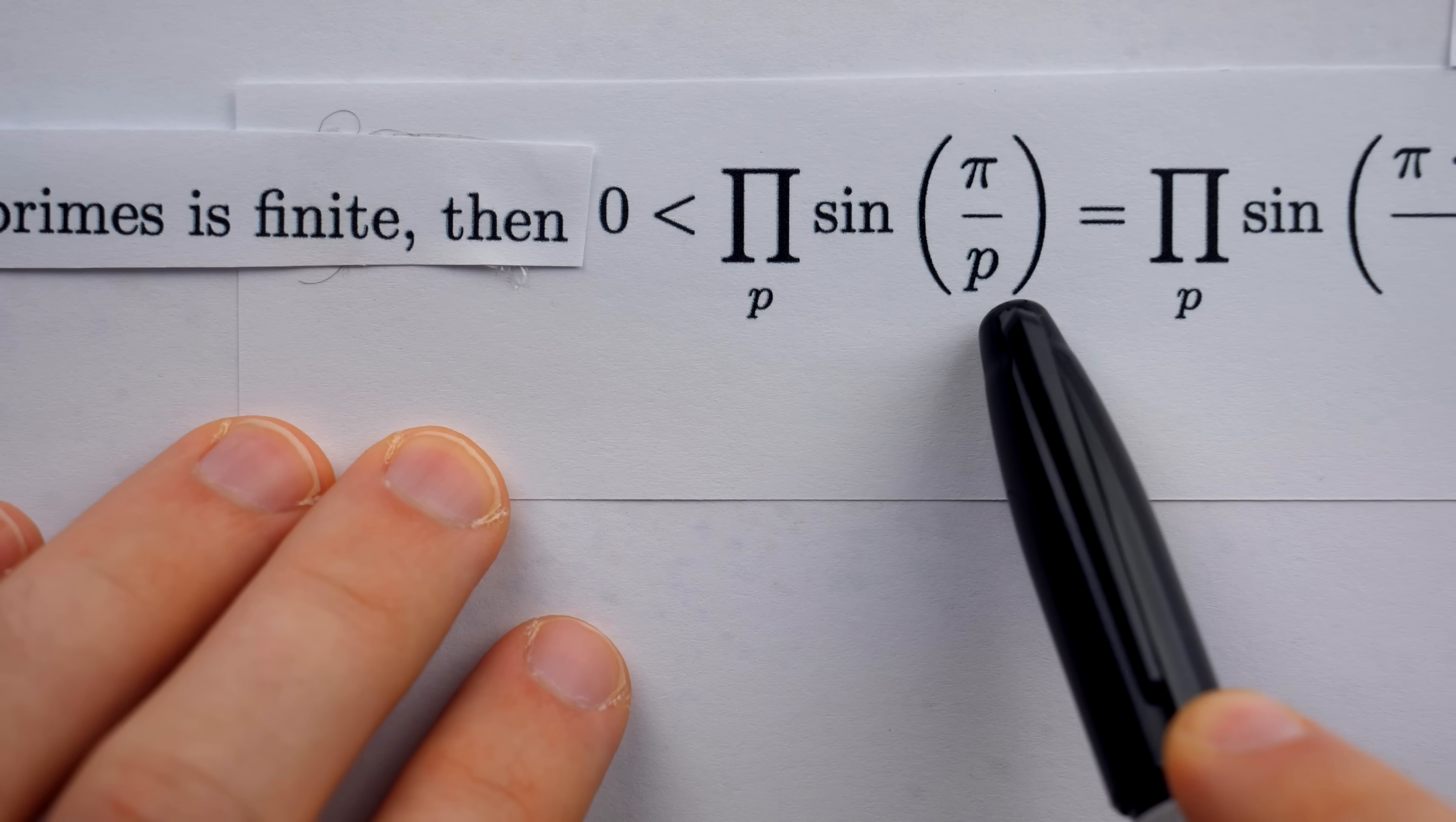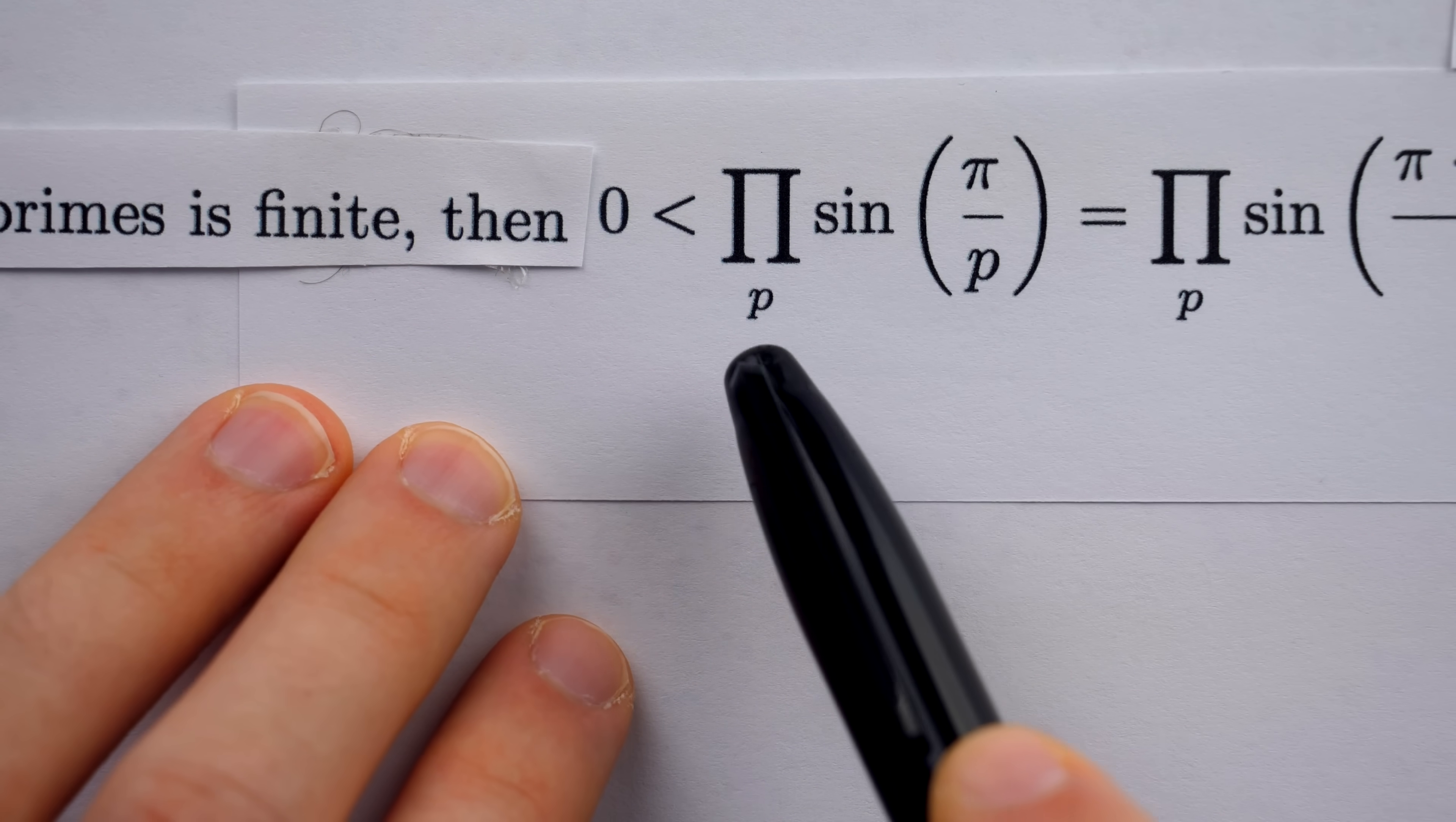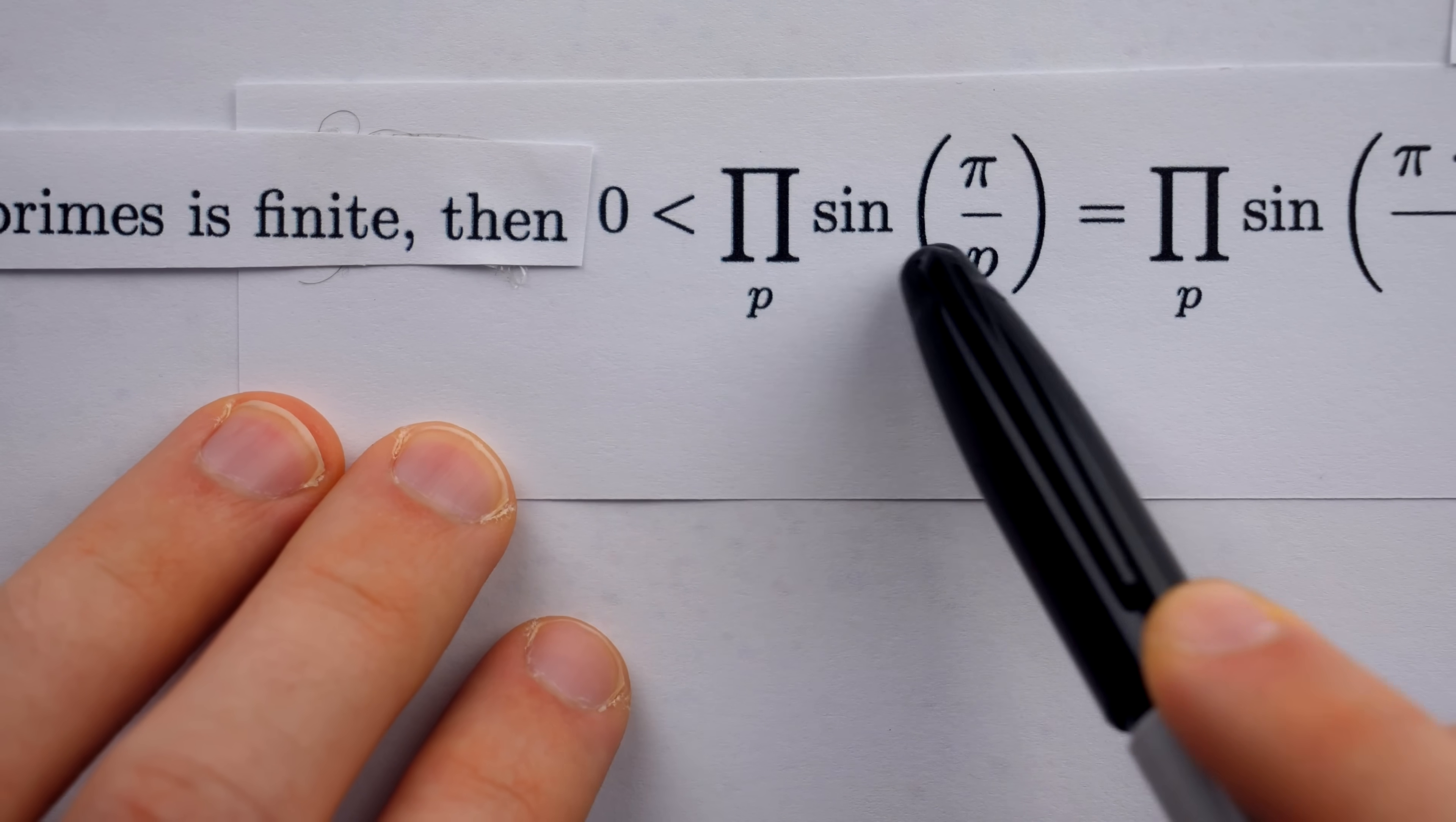This is true because, for starters, this is a finite product because we're assuming there are finitely many primes, so it's some defined number, and we know that every number in this product is positive.